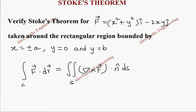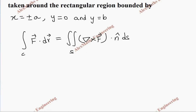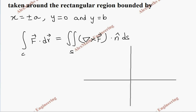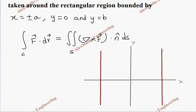We are going to construct a diagram for the given rectangular region. We have the x-axis and y-axis. The boundaries are x = ±a, so x = +a crosses the x-axis at point a and x = −a crosses at −a. y = 0 is the x-axis itself, and y = b is a line crossing the y-axis at point b.